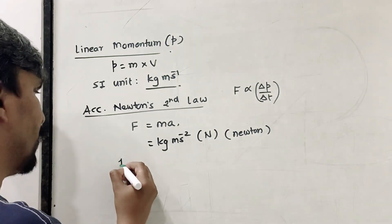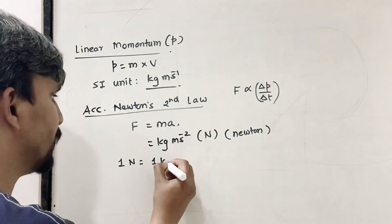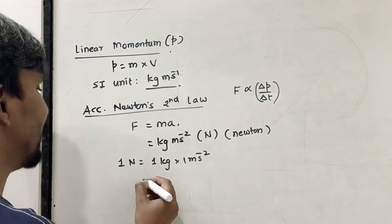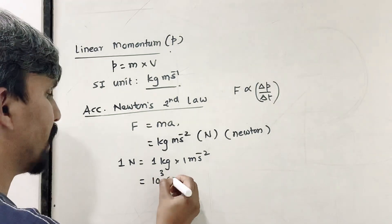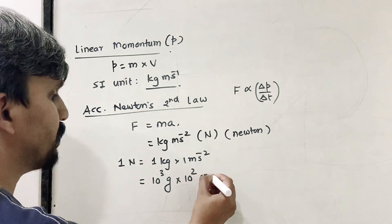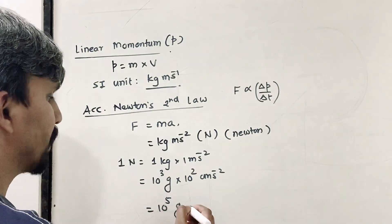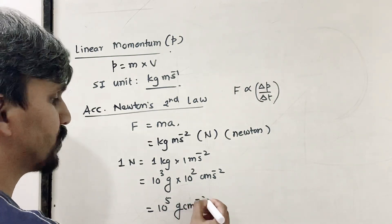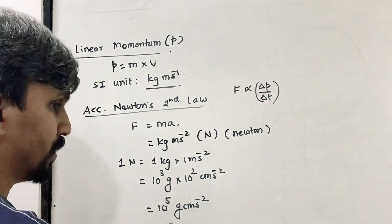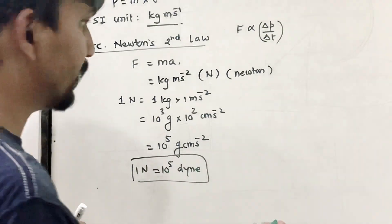The relation between SI and CGS units: one Newton equals 1 kg × 1 m/s². Since 1 kg = 10³ grams and 1 m = 10² cm, one Newton equals 10⁵ gram·cm/s², which is 10⁵ dyne. So one Newton equals 10⁵ dyne.